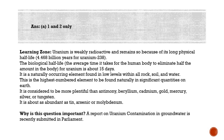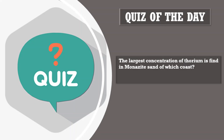Today's quiz question: another weakly radioactive element is thorium, predominantly found in coastal regions of India. The question is — the largest concentration of thorium is found in monazite sand of which coast? Please post your answers in the comment section. That's all for today — we'll meet tomorrow with another set of questions. Please post your doubts also in the comment section. Thank you for watching.